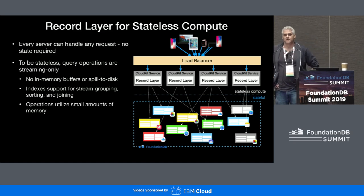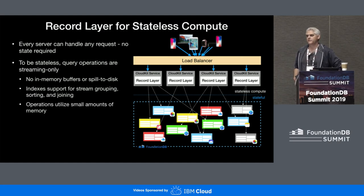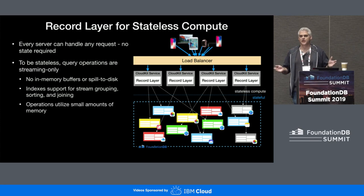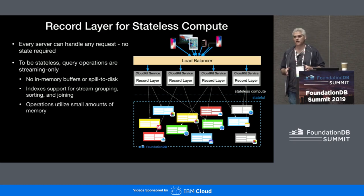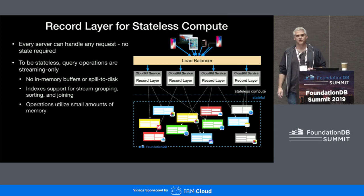The other major attribute of RecordLayer is stateless compute. What this means is that every server can handle any given request. A great deal of care went into RecordLayer to make sure that physically opening a record store and beginning work on it is extremely fast — it can be done in milliseconds. Every incoming request, these servers are just sitting out there arbitrarily handling requests. They open the database, do their work, close it, and they're done. Furthermore, all of the requests we currently support are stateless and streaming — none of them do any in-memory work. That means no in-memory sorting, no in-memory joins, nothing that spills to disk. Instead, we rely very heavily on RecordLayer's extensive library of indexes to support these operations.